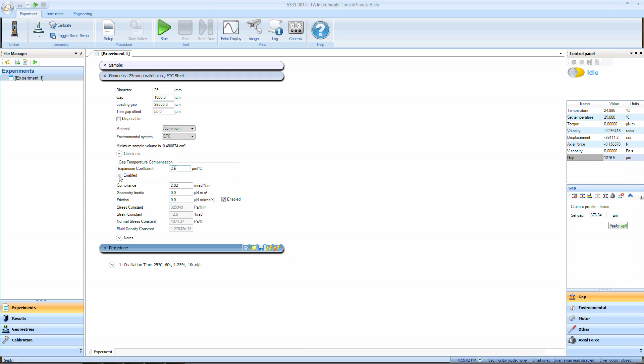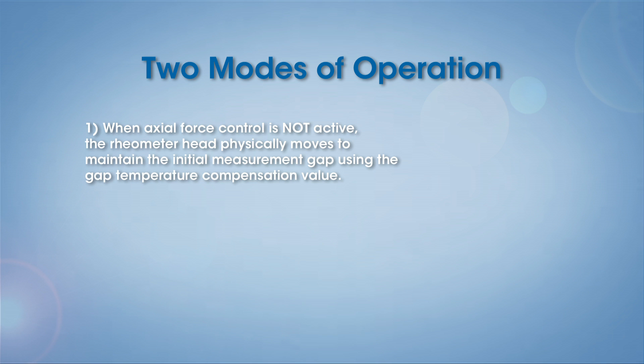When enabled, there are two modes of operation depending on the set axial force control. When axial force control is not active, the rheometer head physically moves to maintain the initial measurement gap using the gap temperature compensation value.